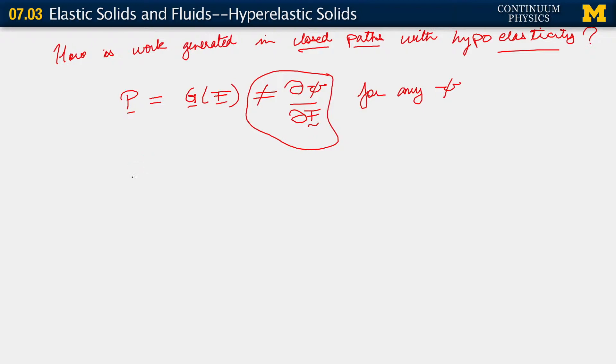By saying that this last equality is not obtained, what we are saying is that we don't have any state function psi. What this means is that when we do work and calculate the work done, we do not have a mechanism to store that work. If psi existed, we would have a physical mechanism in the material to store that energy. Instead, we've constructed a model — and this may not be a physically realistic model — in which we have neglected or failed to come up with a mathematical mechanism for storing that energy.